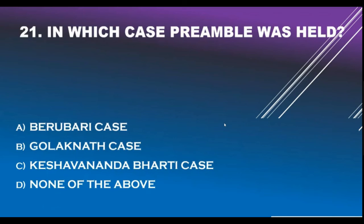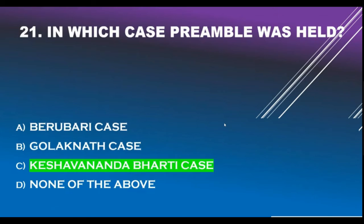Question number 21. In which case was the Preamble held to be part of the Constitution? Option A - Berubari case. Option B - Golaknath case. Option C - Keshwananda Bharati case. Option D - Nanab Debo. Correct answer is Option C: Keshwananda Bharati case.